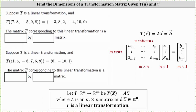Suppose T is a linear transformation, and T of the given input vector equals the given output vector. Notice how the vector in the domain has five components, and the vector in the co-domain has six components. This linear transformation is a mapping from R5 to R6.